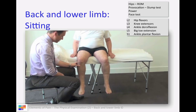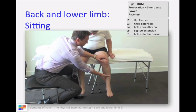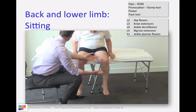The slump test: get the patient to slump forward and do a straight leg raise test in the sitting position, attempting to reproduce their pain. Ankle dorsiflexion might worsen their pain, and that's reduced by knee flexion.